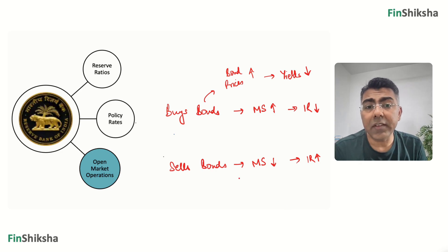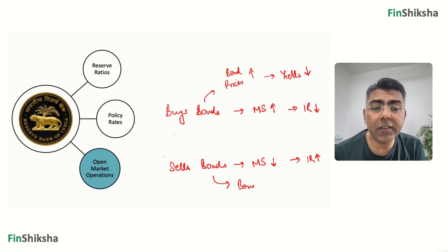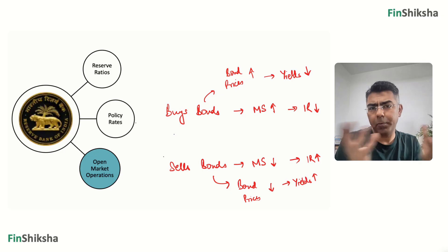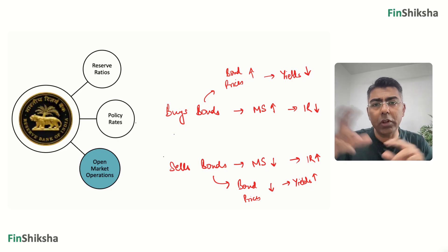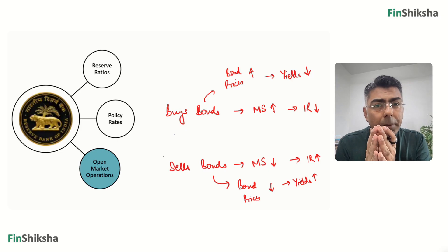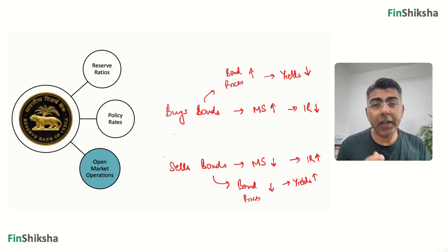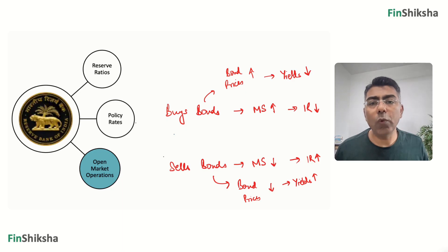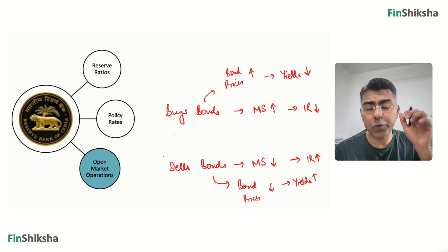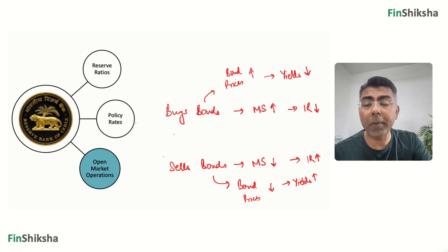When RBI sells lots of bonds, there's more bond supply, so bond prices fall, yields go up, and that's basically interest rates going up in the economy. So even with policy rates set, if actual market rates are moving around, RBI can buy or sell bonds in the open market to control interest rates. That's how RBI uses these three tools: reserve ratios, policy rates (repo rate), and open market operations.